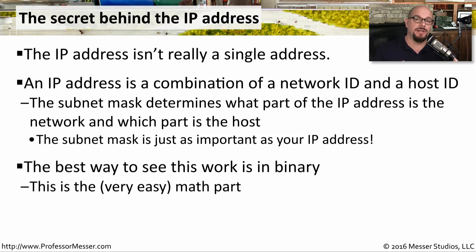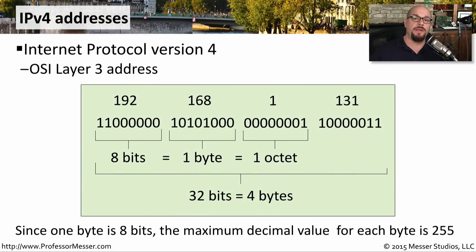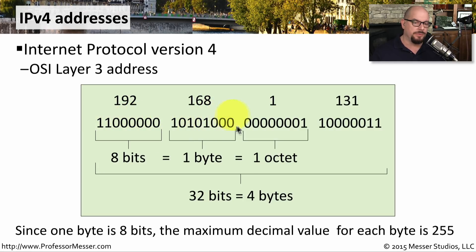When determining the network ID from the host ID, you usually perform calculations in binary. As we do more subnetting calculations in this video series, you'll see the IP address and subnet mask represented as binary values. For an IPv4 address like 192.168.1.131, we can write out its binary representation just underneath it. An IPv4 address is four groupings of 8-bit octets — this is how we represent an IPv4 address in binary form.